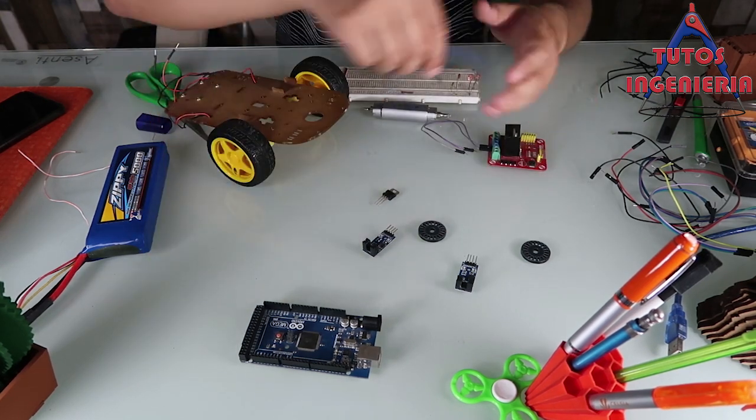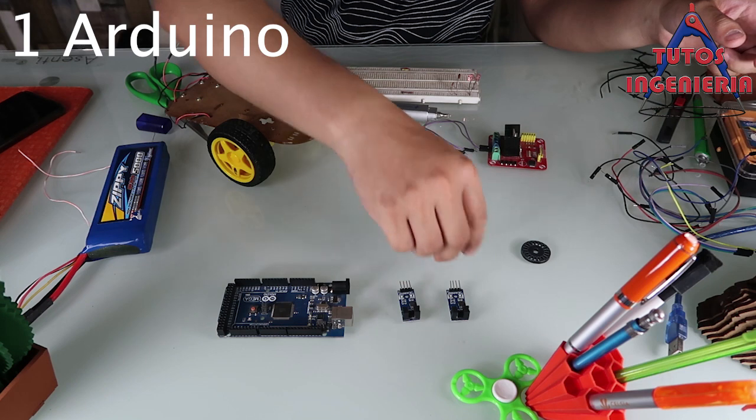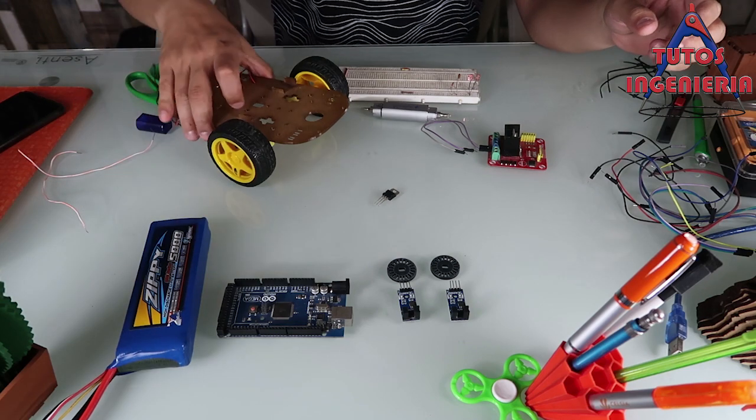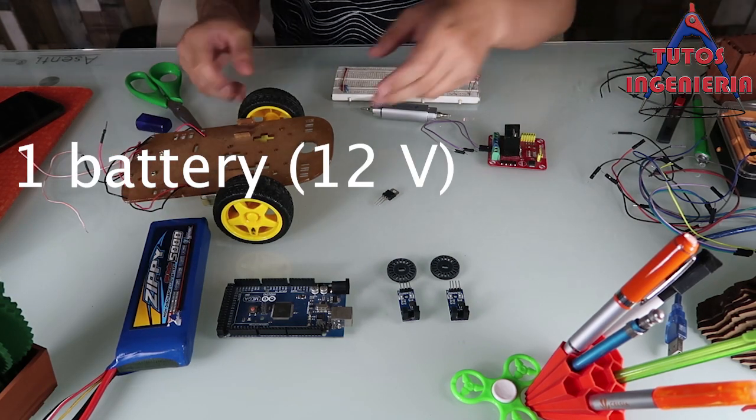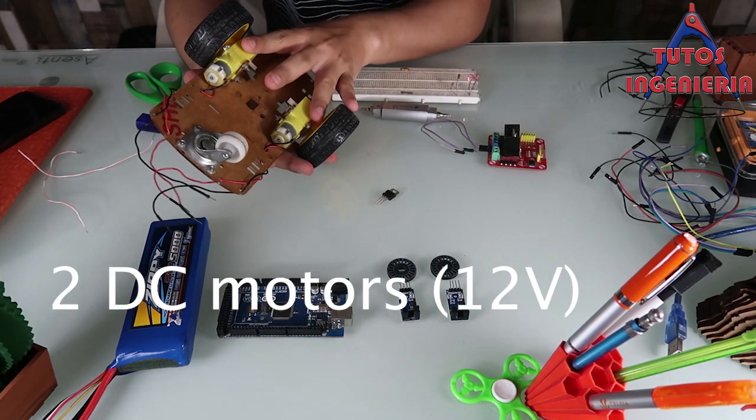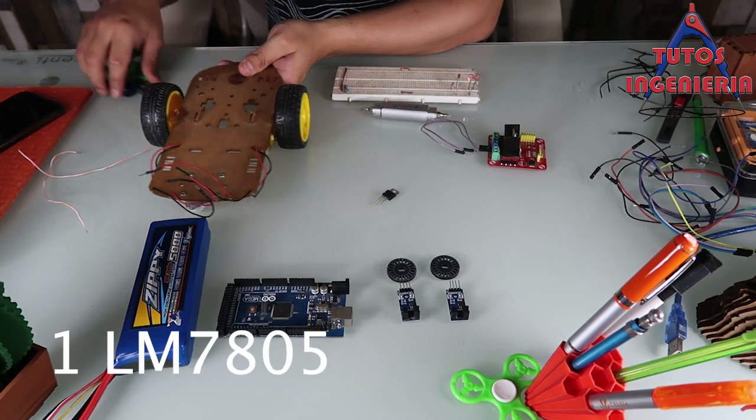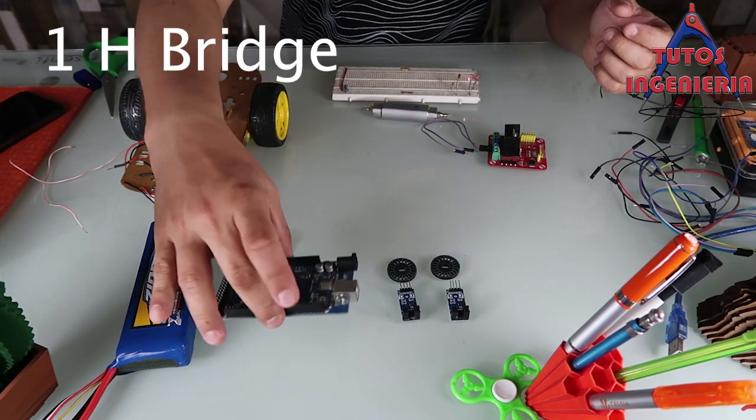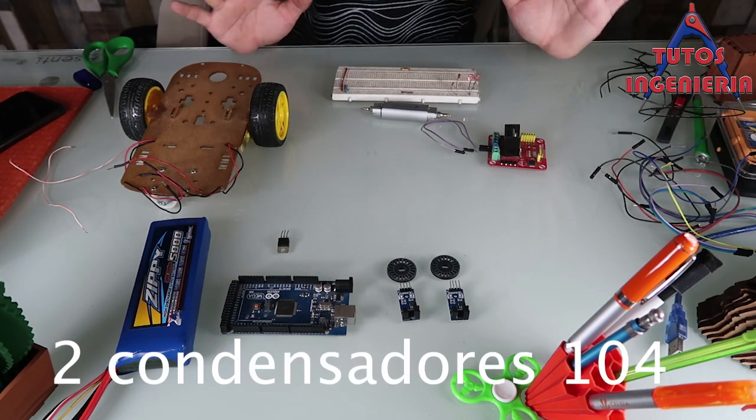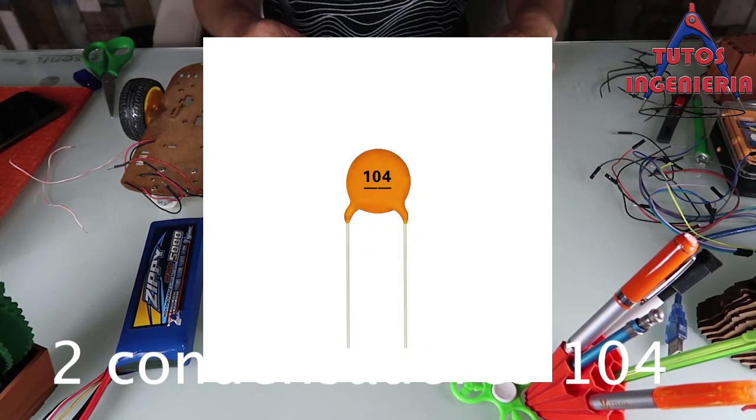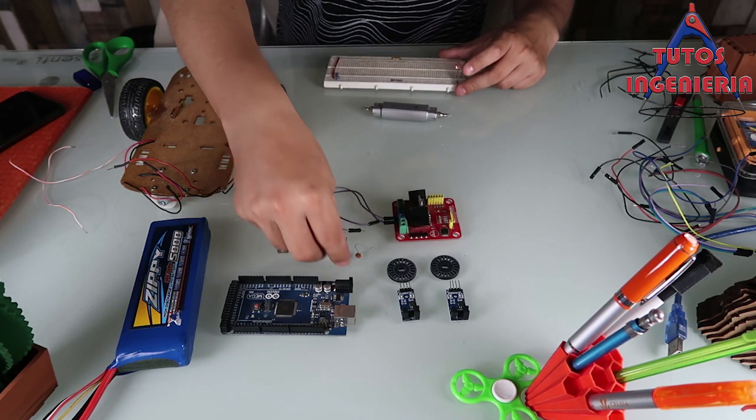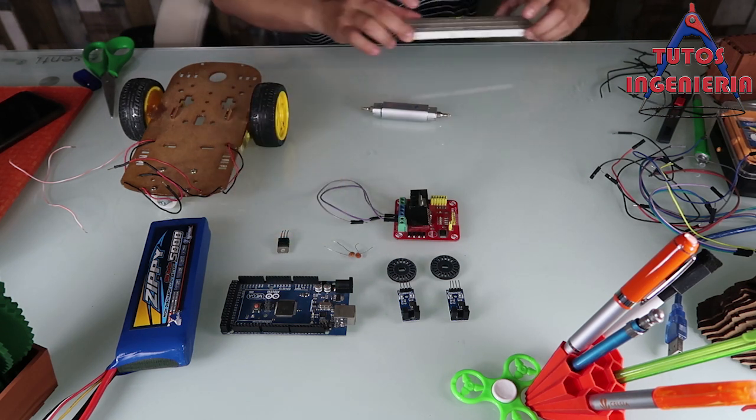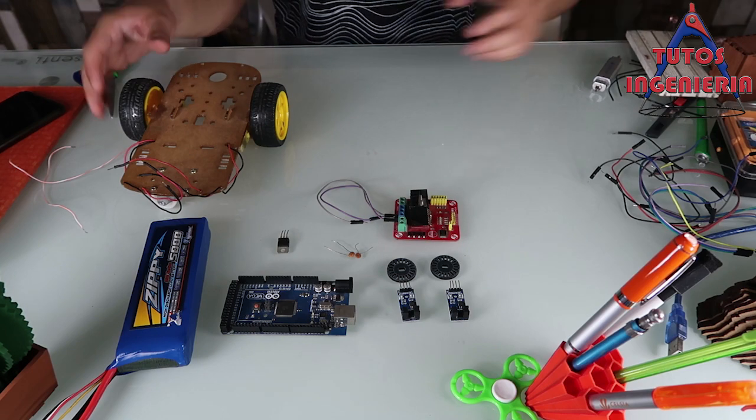Those are the elements that we use: Arduino Mega, two encoders with two holes disks, a battery, a mobile platform with two DC motors, an LM7805, an H-bridge, two ceramic condensers 104, and that's it. Remember the loop: the encoders read and the Arduino processes the signals, it sends signals to the H-bridge, and the motors move, so the loop starts again.